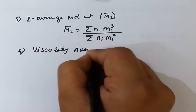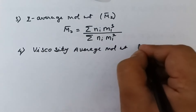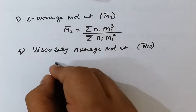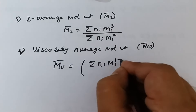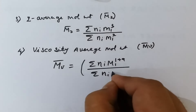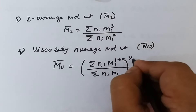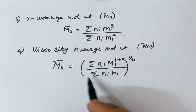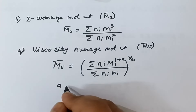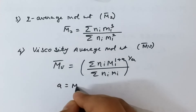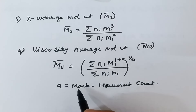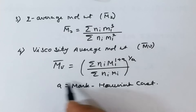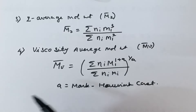The fourth method is viscosity average molecular weight, represented by Mv bar. Its formula is: Mv bar = [summation(ni·mi^(1+a)) divided by summation(ni·mi)] raised to the power 1/a. Here, 'a' is the Mark-Houwink constant, which relates the intrinsic viscosity with the viscosity average molecular weight.